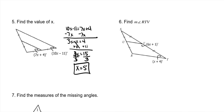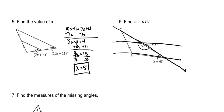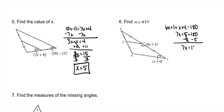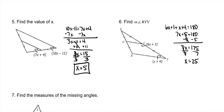For this problem, these angles are not corresponding. These are parallel lines cut by a transversal, and the angles are consecutive interior angles, so they are supplementary. Add them together and set equal to 180: 6X plus 1 plus X plus 4 equals 180. Combining gives 7X plus 5 equals 180. Subtract 5: 7X equals 175. Divide by 7, and X is 25. To find the measure of angle RTV, do X plus 4: 25 plus 4 equals 29 degrees.